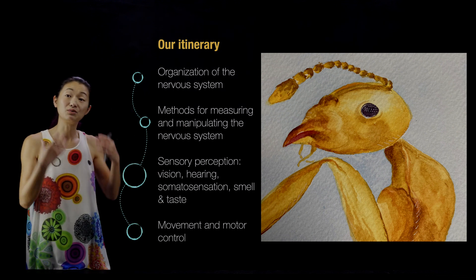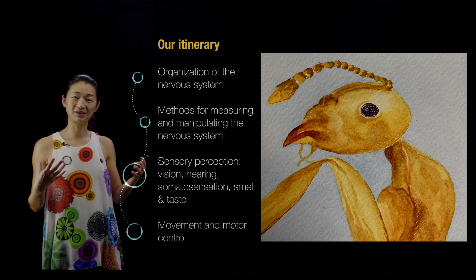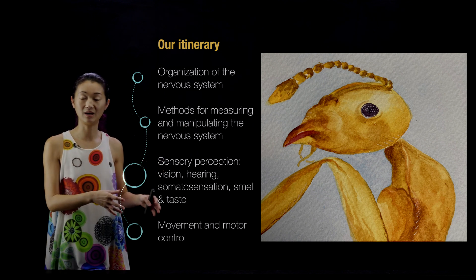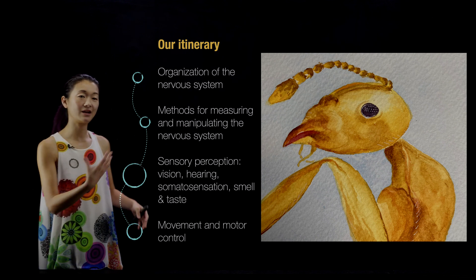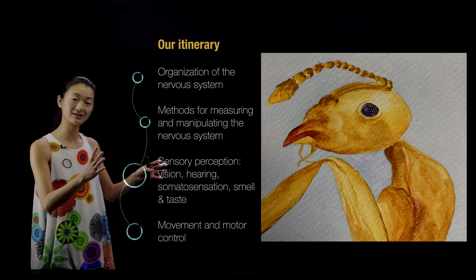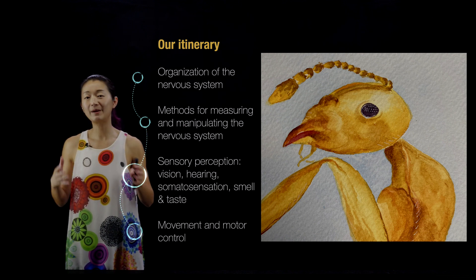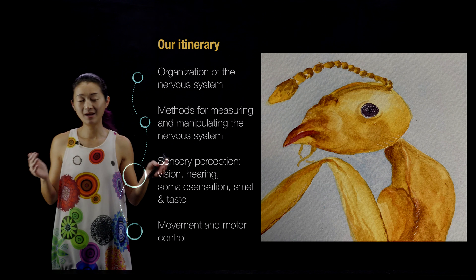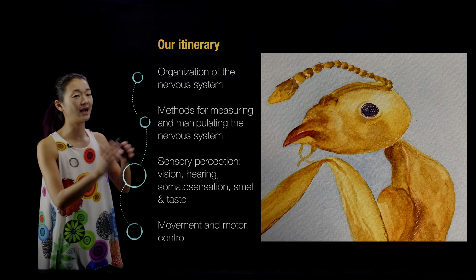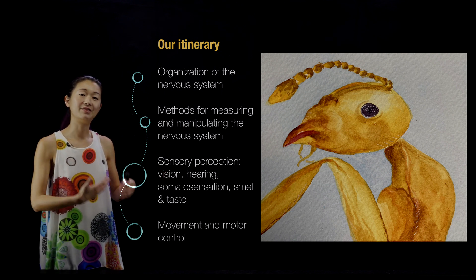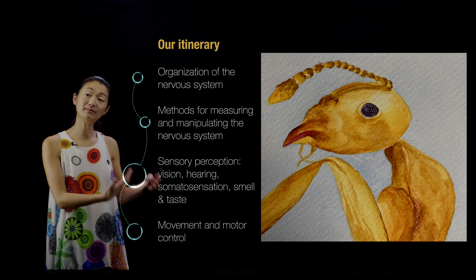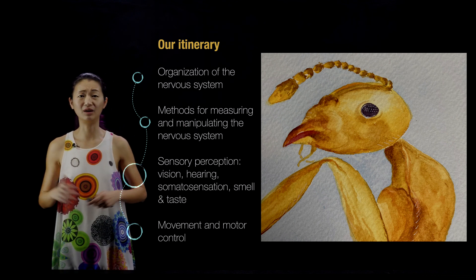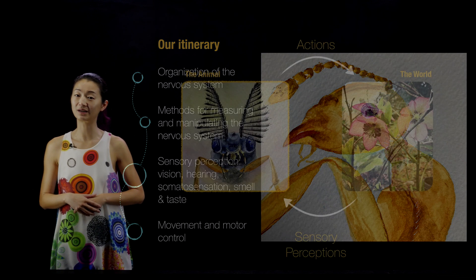Next we're going to use all of those tools and techniques to understand different sensory perceptions, movements, and motor control. Rather than treating these as completely separate things, we're going to talk about how they interact with each other and think about the ways they are similar, rather than how they differ, because they actually have a lot in common in terms of how the nervous system is organized.